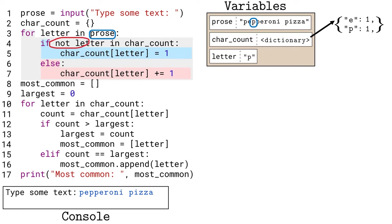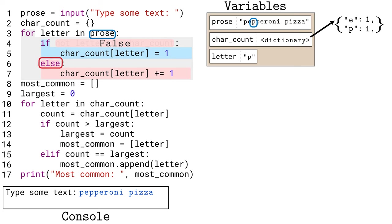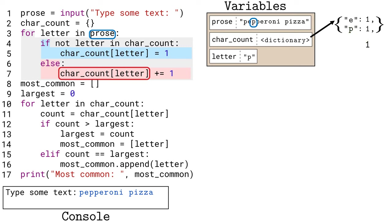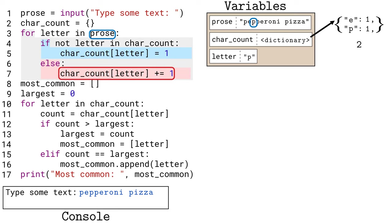After completing the if statement, we skip the else and go back to the top of the loop. The letter variable steps to the next character in 'prose', a lowercase 'p' again. This time, the 'in' operator returns true because the letter 'p' is already a key in the 'char_count' dictionary. The 'not' operator inverts true, resulting in a false condition, so we skip the if and run the else on line 7. Python retrieves the value associated with key 'p' (which is 1), adds 1 using the plus-equals operator, and stores 2 back as the value for 'p'. The dictionary now shows 'e' once and 'p' twice.